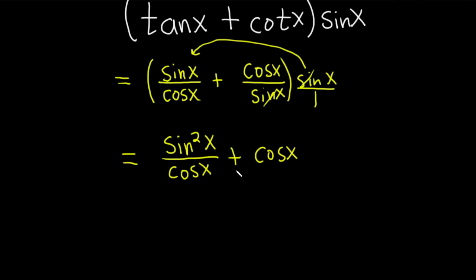So now the only thing we can really do is maybe add these. So before we add these, we need to have a common denominator. And remember that this is really a fraction where 1 is the denominator. So if we can make it a cosine, then we can add these up.